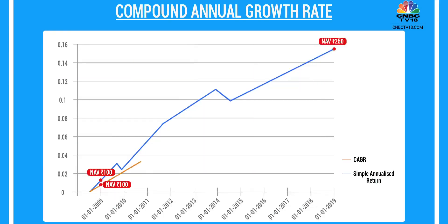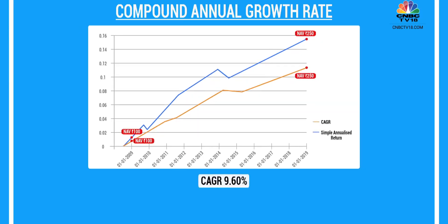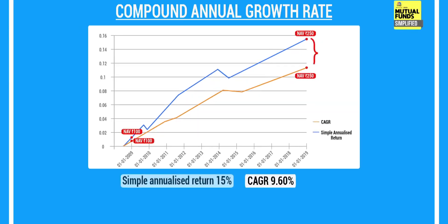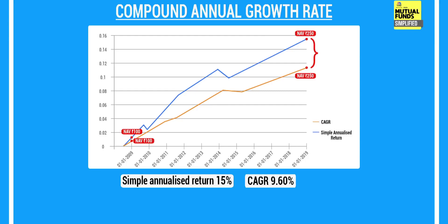So now you see the difference: simple annualized takes you to ₹250, while compounding at 15% would take you to ₹404. If we work backwards to find the actual CAGR where the NAV moves from ₹100 to ₹250, it works out to be 9.6%. The difference between the simple annualized return of 15% and the CAGR of 9.6% is 5.4% — and that is not ignorable.